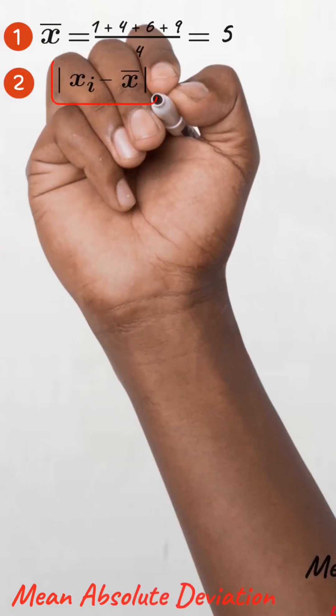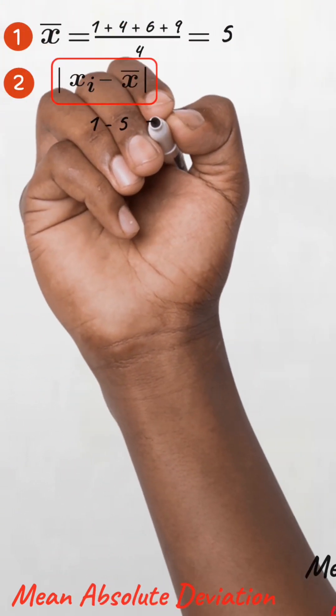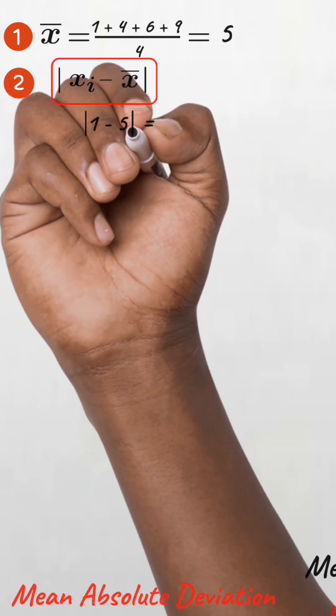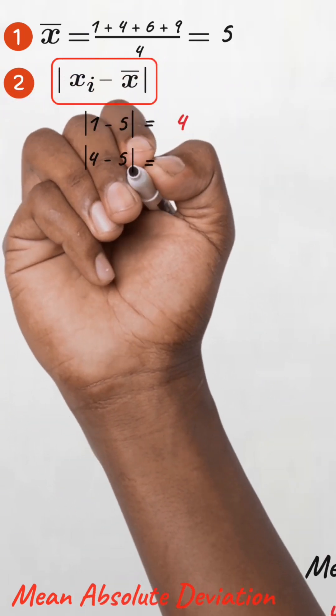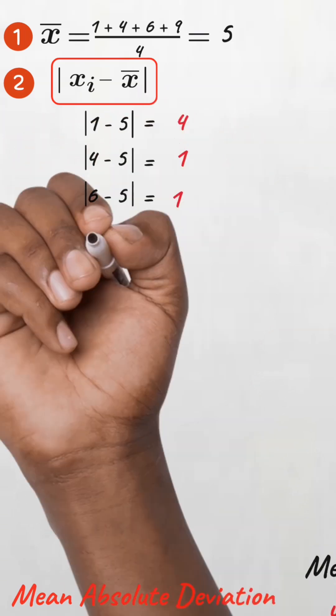Then the absolute deviations from the mean: this will be 1 minus 5, that's minus 4, and the absolute value is 4. Then 4 minus 5, that's minus 1, and the absolute value is 1. Then 1 here and then 4.